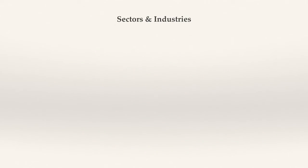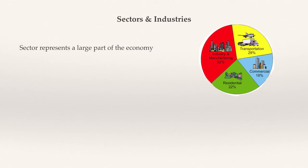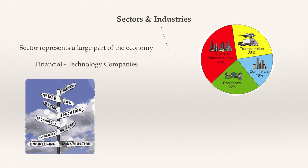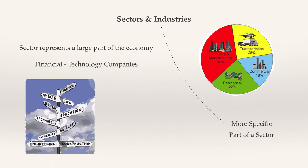Companies are always divided into sectors and industries. A sector represents a large part of the economy — these can be sectors from financial to technology companies. Industries, on the other hand, are much more specific and are part of a sector. For example, banks are an industry within the financial sector.